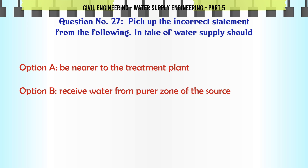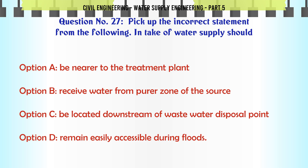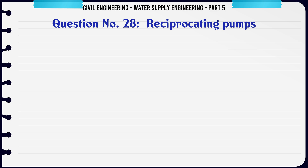Pick up the incorrect statement: The intake of a water supply should: A. Be nearer to the treatment plant; B. Receive water from the purer zone of the source; C. Be located downstream of the wastewater disposal point; D. Remain easily accessible during floods. The correct answer is: Located downstream of the wastewater disposal point.